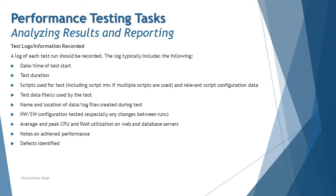Test logs and information recorded during the performance test can also be included in the report. The log of each test run should be recorded and typically includes: date and time of test start, test duration, scripts used and relevant configuration data, test data files used, name and location of data or log files created, hardware and software configuration tested, average and peak CPU and RAM utilization on web and database servers, and notes on achieving performance goals and any defects identified.